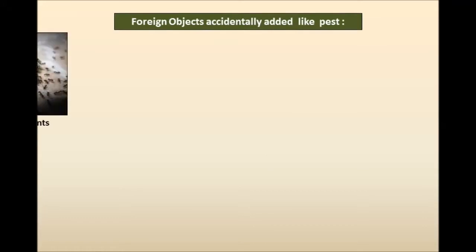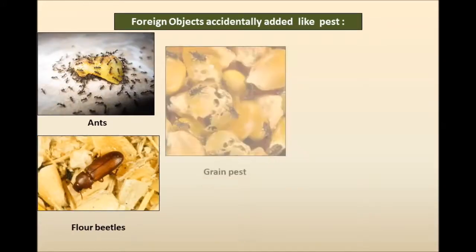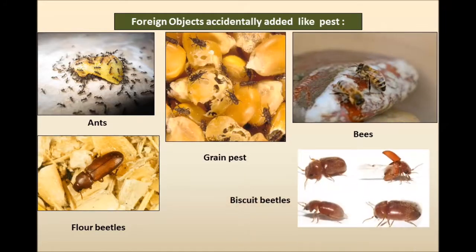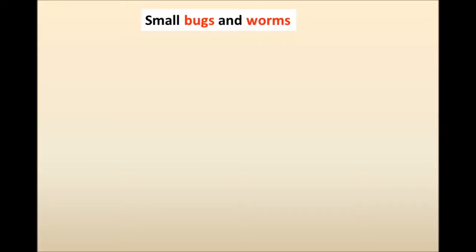Other pests include ants, flour beetles, grain pests, bees, and biscuit beetles. In any food industry, we must understand what kind of pest may invade our premises. In biscuit manufacturing, we focus on flour beetles and biscuit beetles; in grain industry, on grain beetles; in sugar industry, on ants; in honey and candy industries, on ants and bees. There must be controls by a pest contractor, including preventive pest control techniques and traps. Rodents are also pests, which we will cover later.